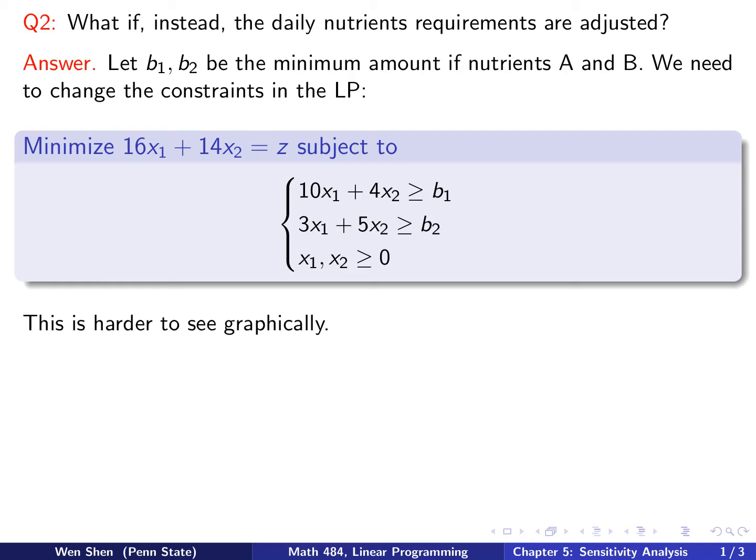And we see that if we want to visualize this graphically, it's kind of difficult because we can't even nail down the feasible region clearly, because B1 and B2 are the two parameters that will vary here. So what shall we do?